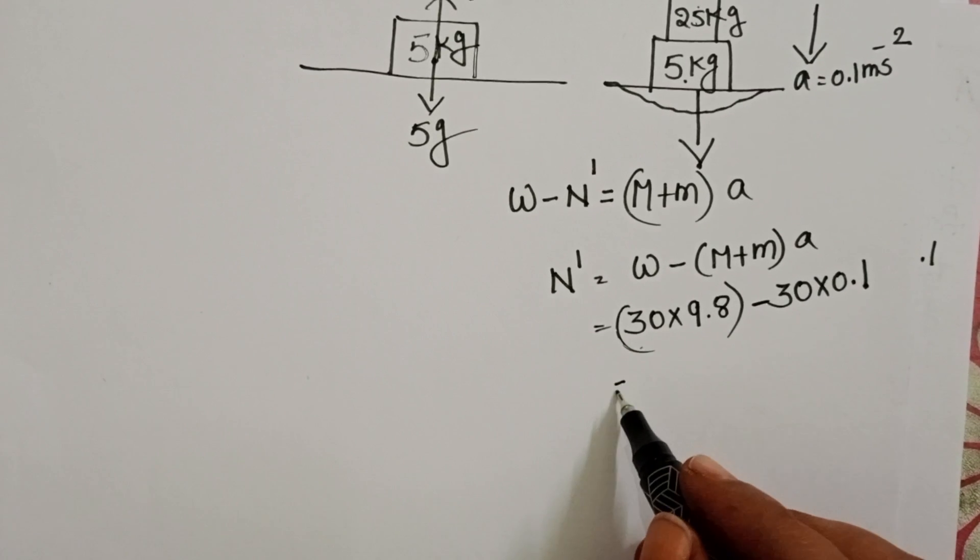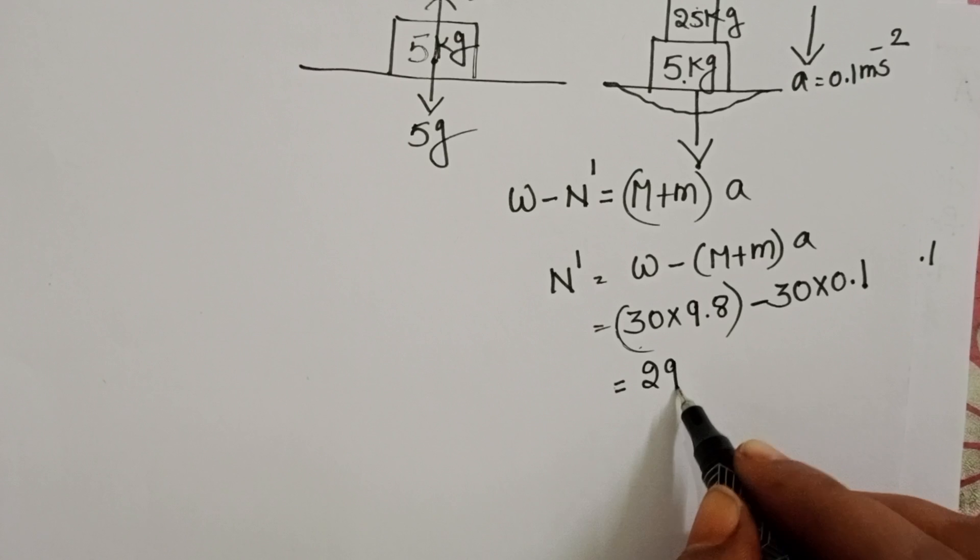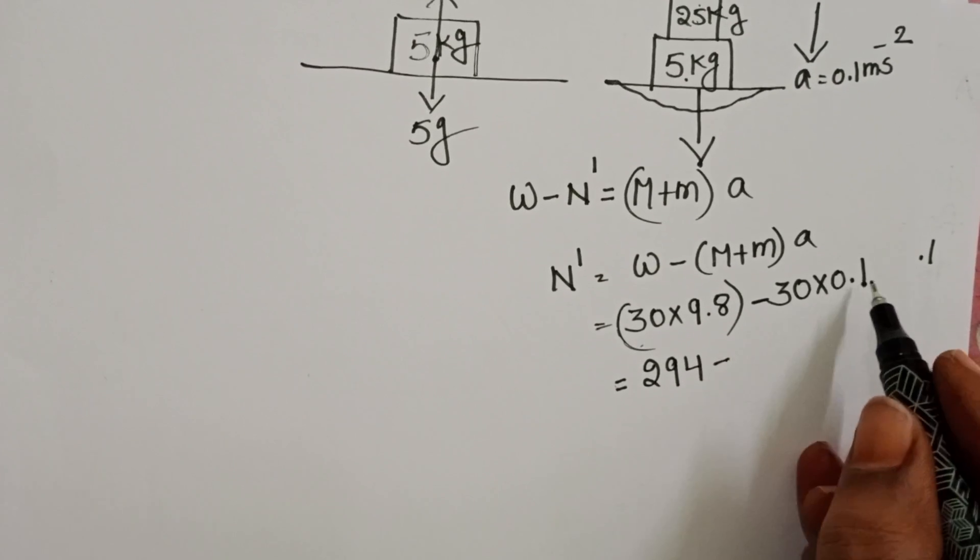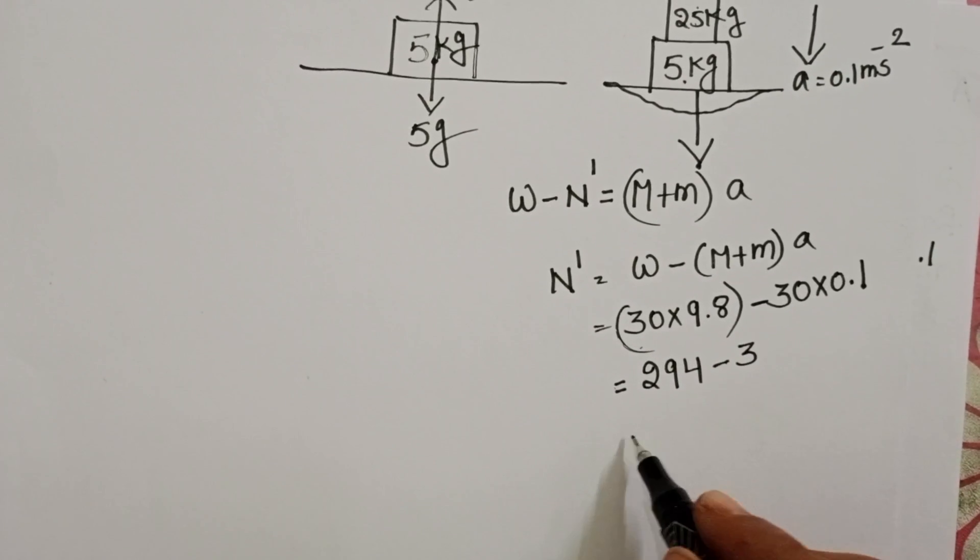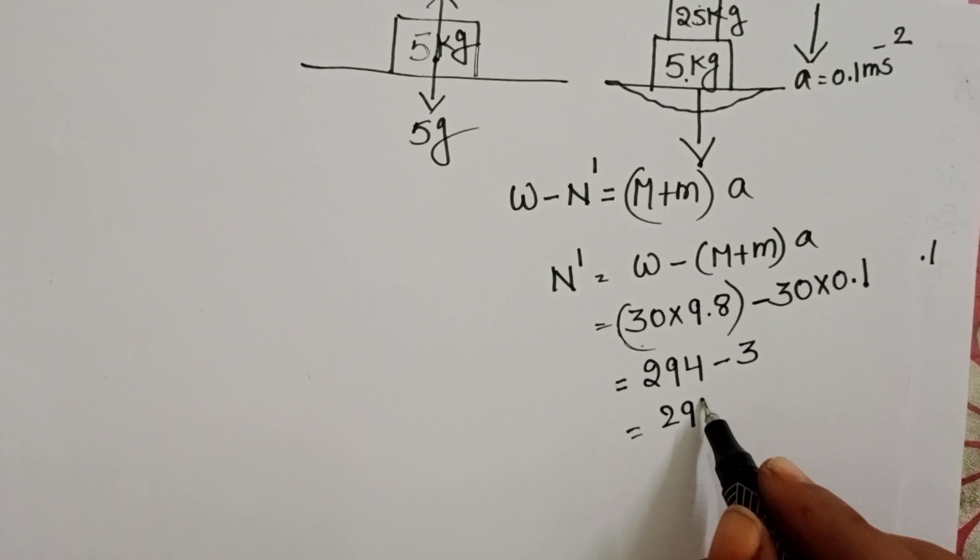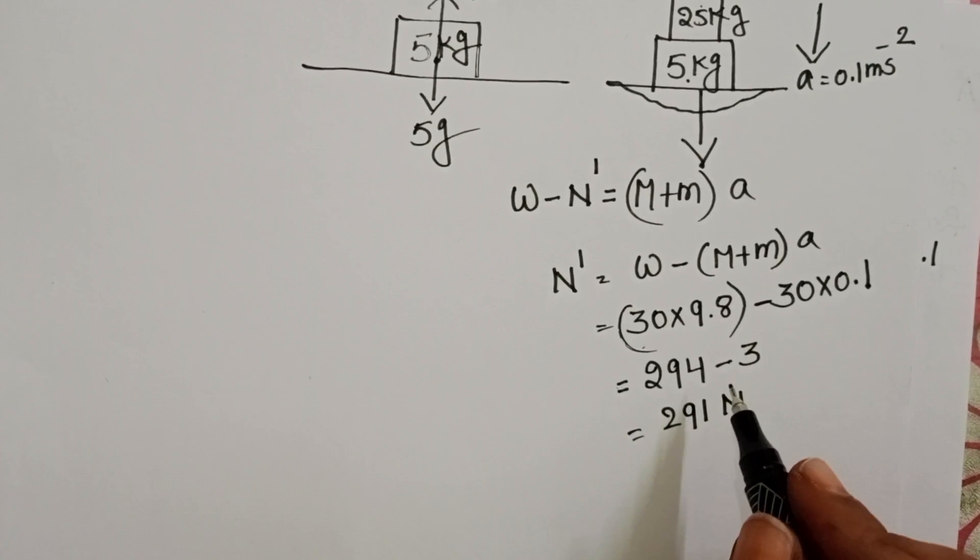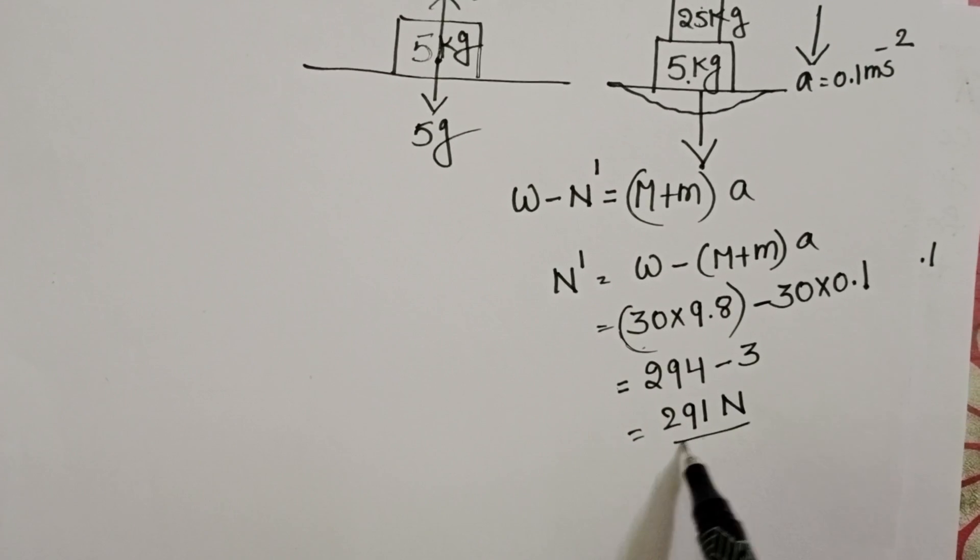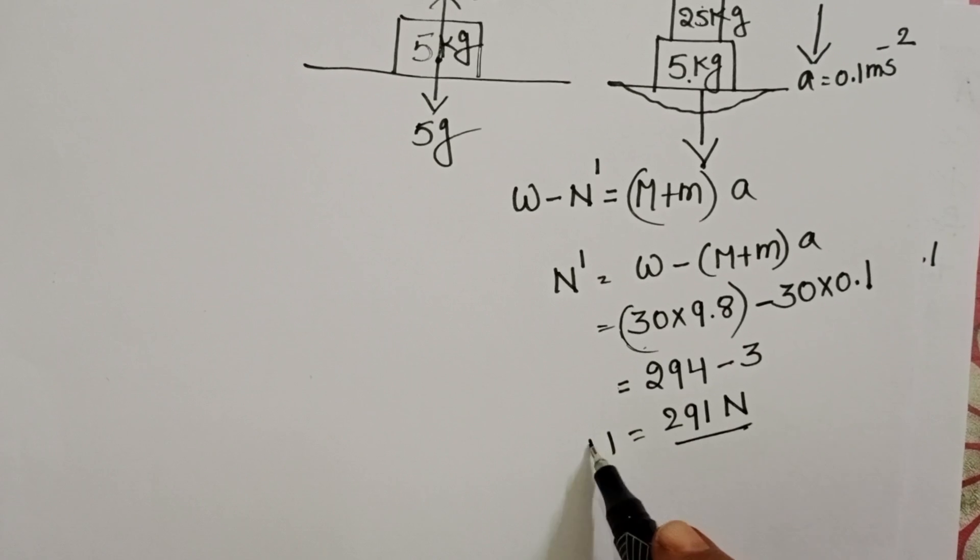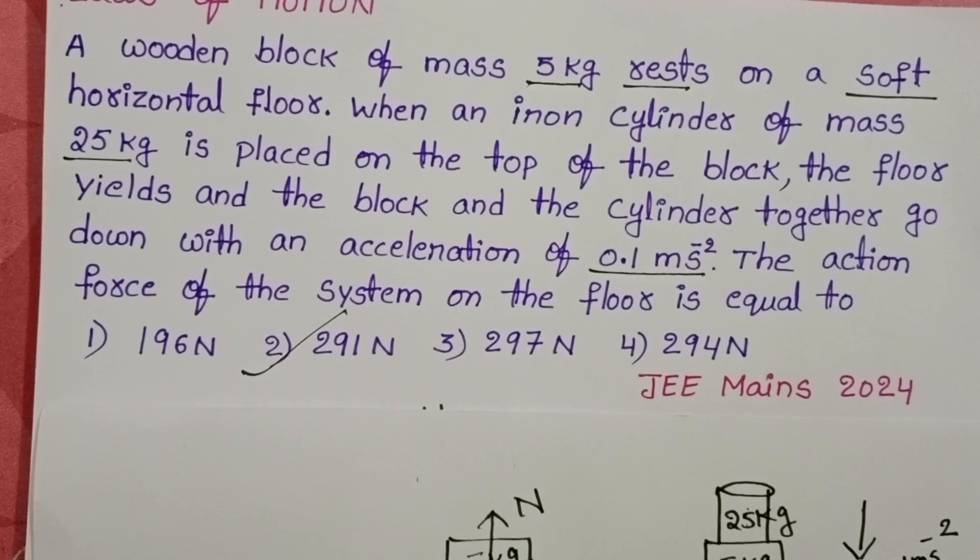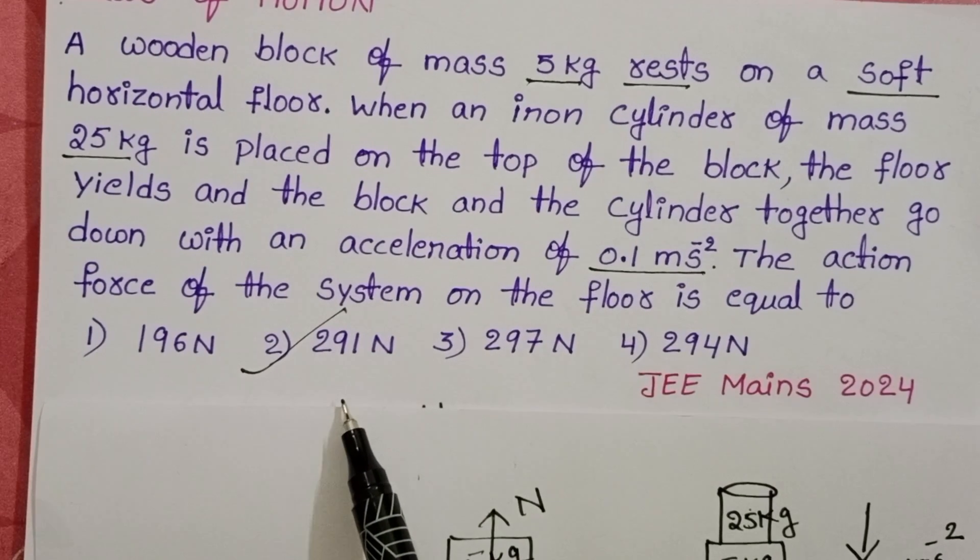Multiply these values: 294 minus 30 into 0.1, that equals 291 newtons. The force exerted by the system on the floor is 291 newtons. Second option is correct.